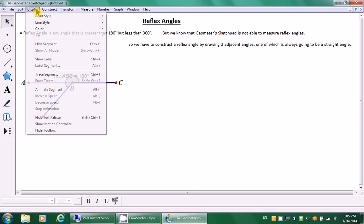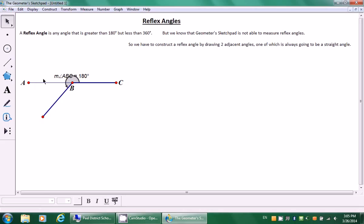But because I traced over it, this part is actually underneath this solid line. I'm going to go to display, line style, choose thin. Then I'm going to go back to display, line style and choose solid.